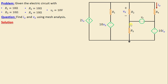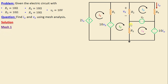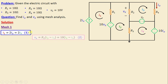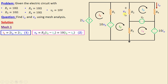Now let's assign the mesh currents: i1 is the current in mesh 1, i2 in mesh 2, i3 in mesh 3, and i4 in mesh 4. Starting with mesh 1, we can see that i1 is equal to 2ix, and here ix equals i3, so i1 equals 2ix equals 2i3. According to Ohm's law, vx equals R2 times (i2 minus i3), which equals 10(i2 minus i3).